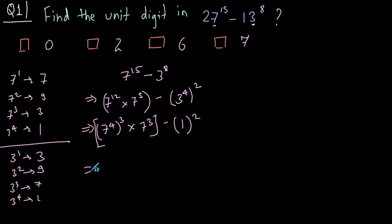Again, solving this, 7 raised to 4 is again 1 cube into 7 cube. 7 cube, the units digit is 3 minus 1. The answer could be 1 into 3 minus 1, so 3 minus 1. So the answer is 2, and the correct option is here, option number 2.